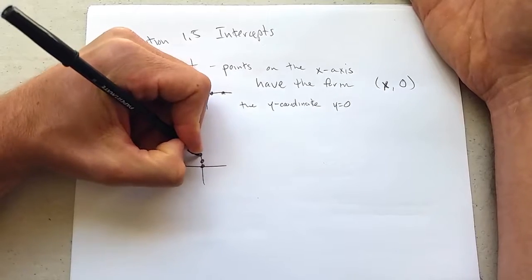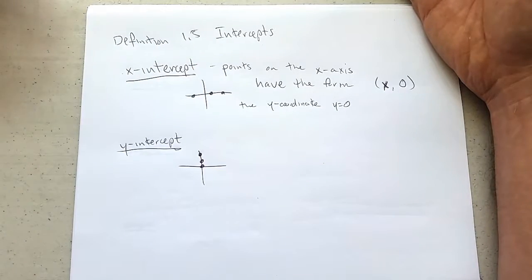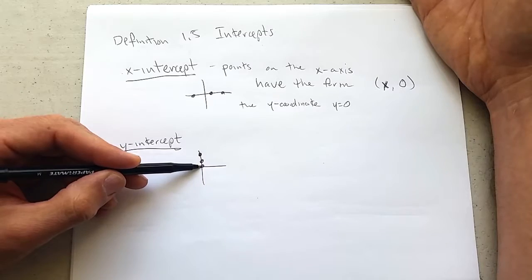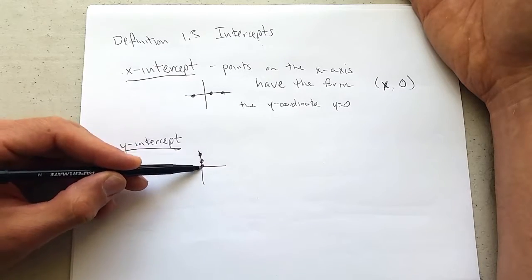All these three points are y-intercepts. What do they have in common? They do have a zero coordinate, but the zero coordinate is not y, it is x.